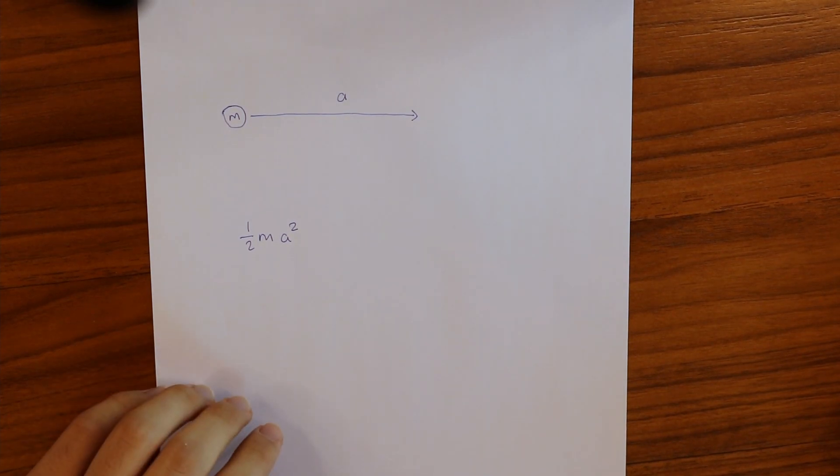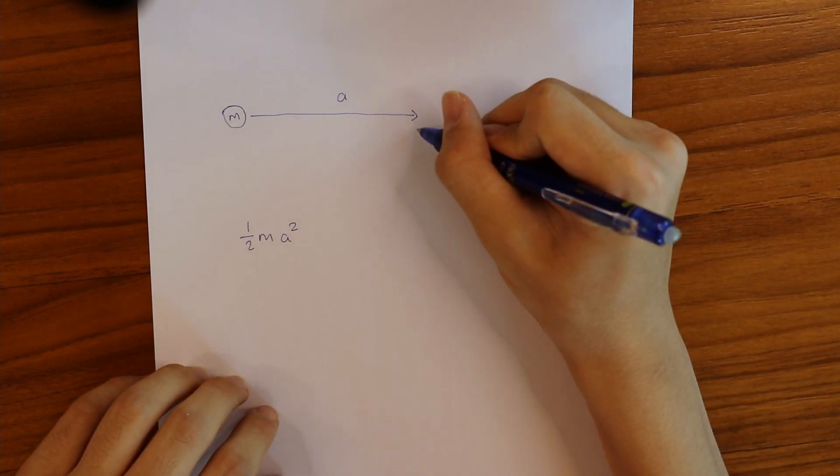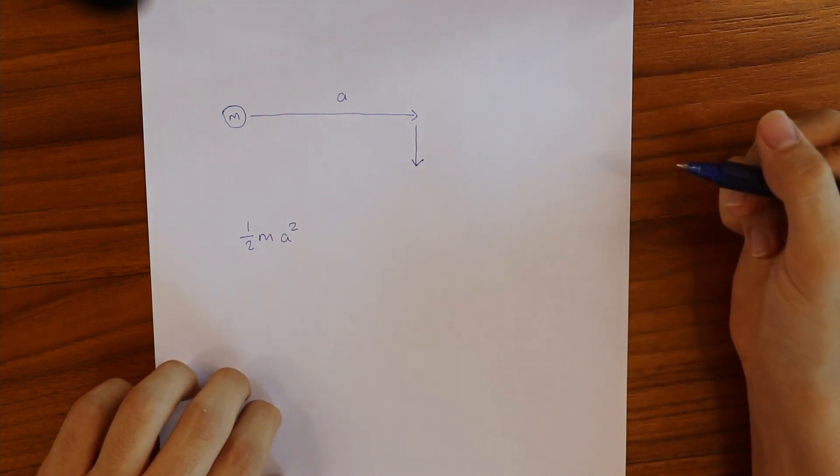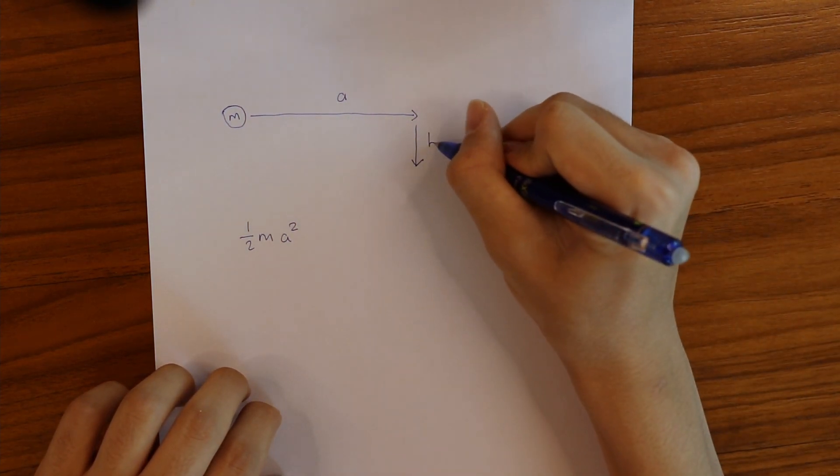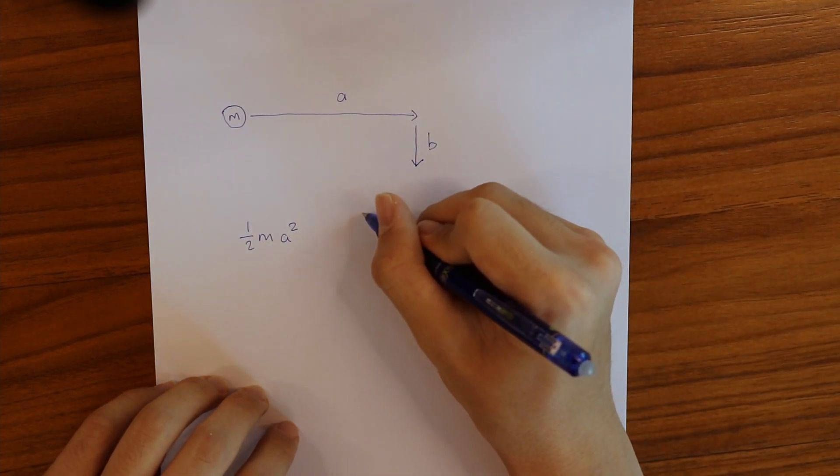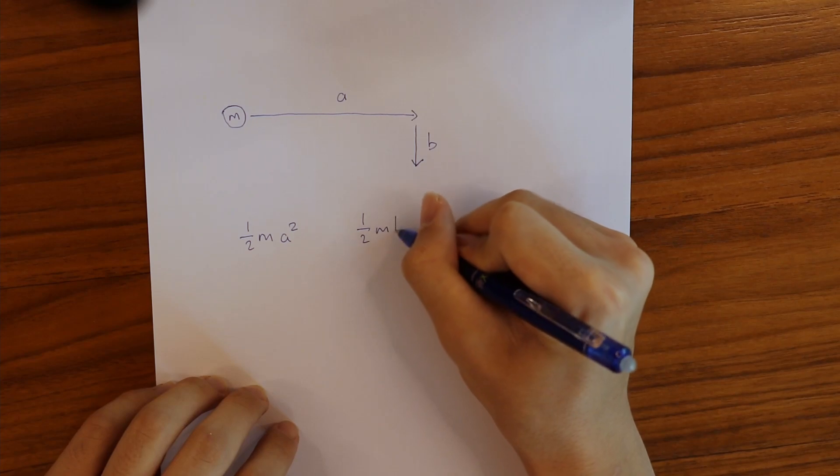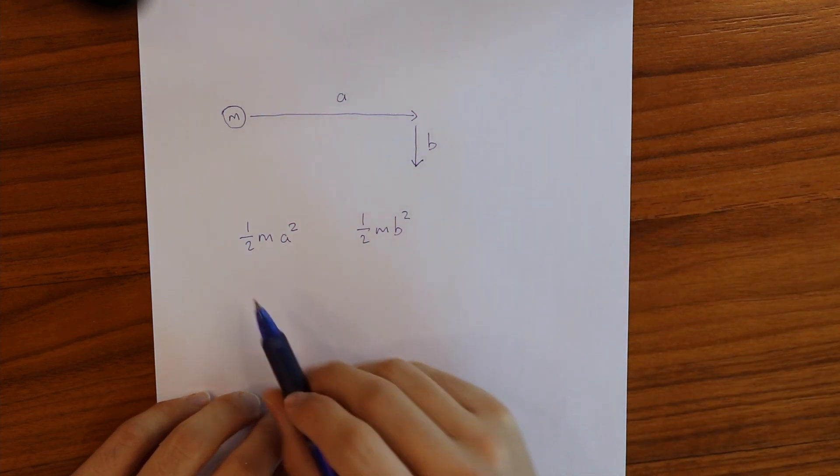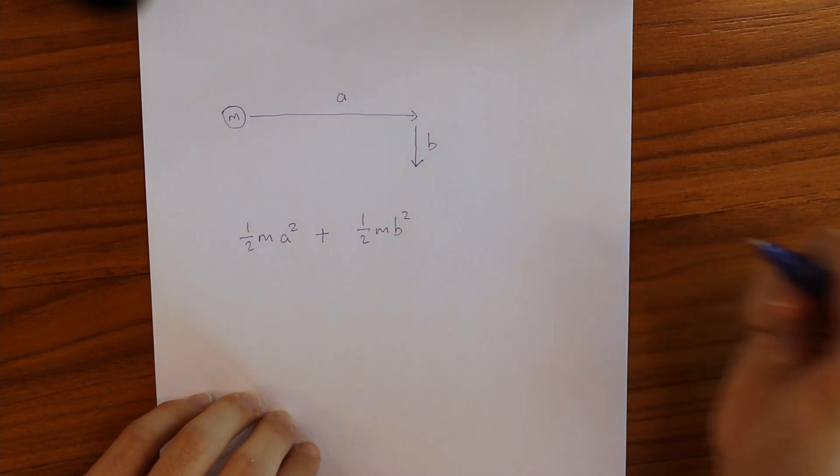Now imagine we add velocity perpendicularly, causing it to also move vertically at a velocity of b. The amount of energy added this time is half m b squared. And this means that the total amount of energy that has been put into this object is half m a squared plus half m b squared.